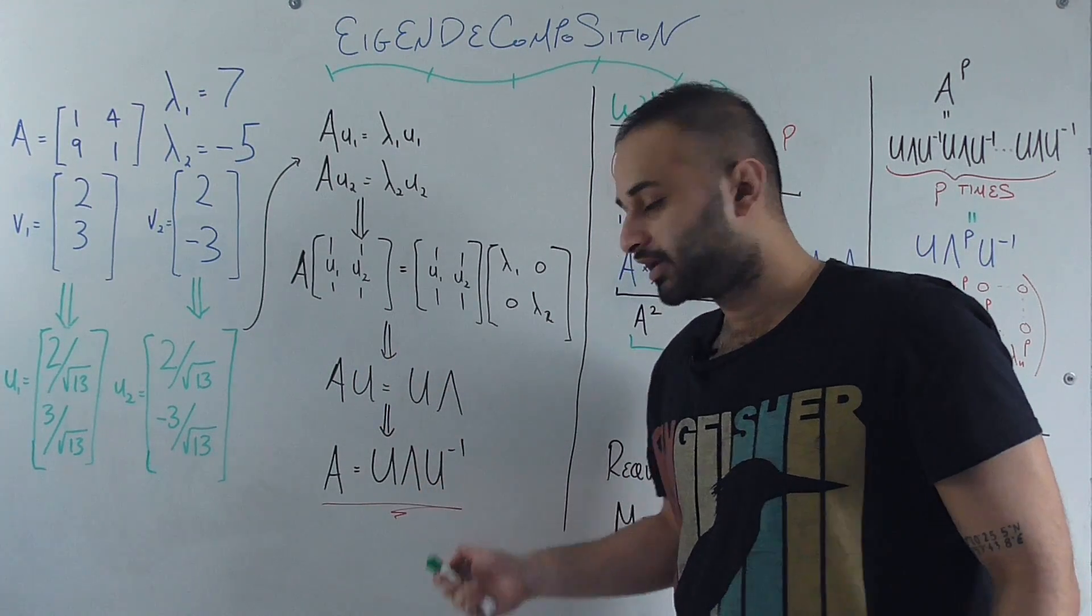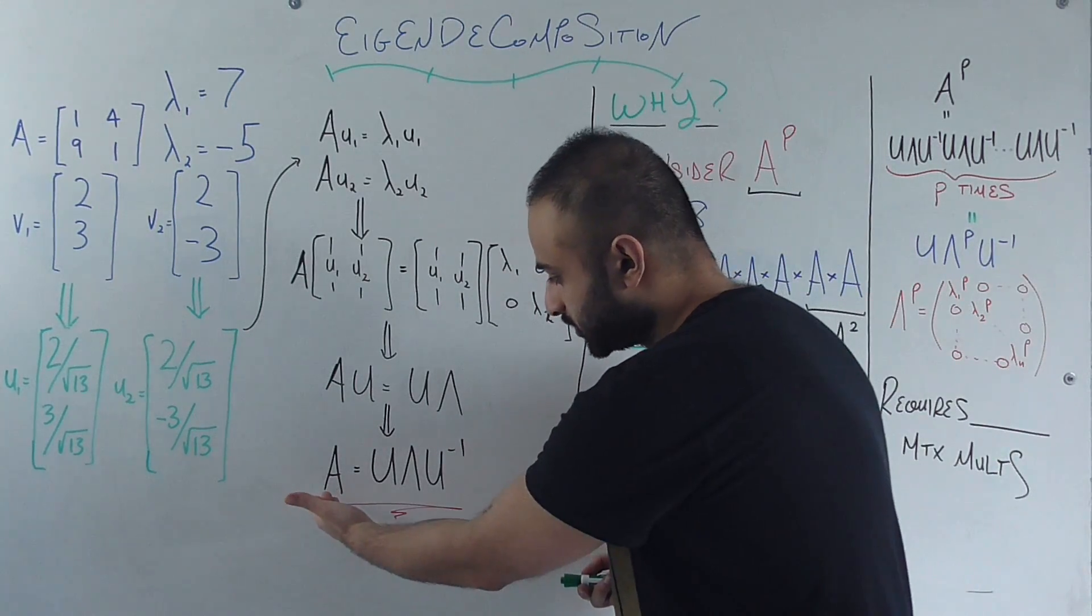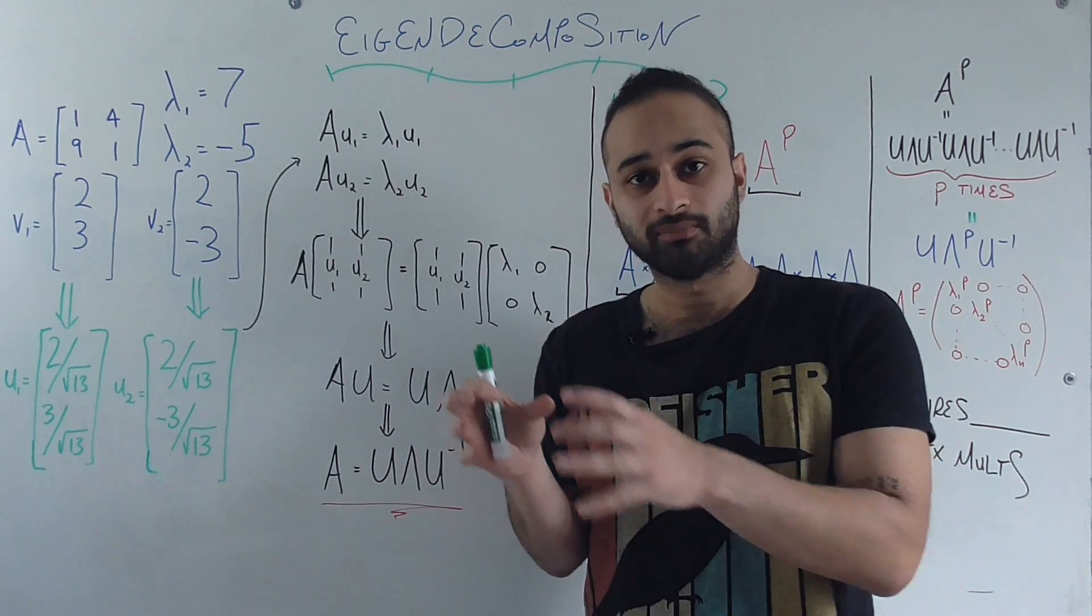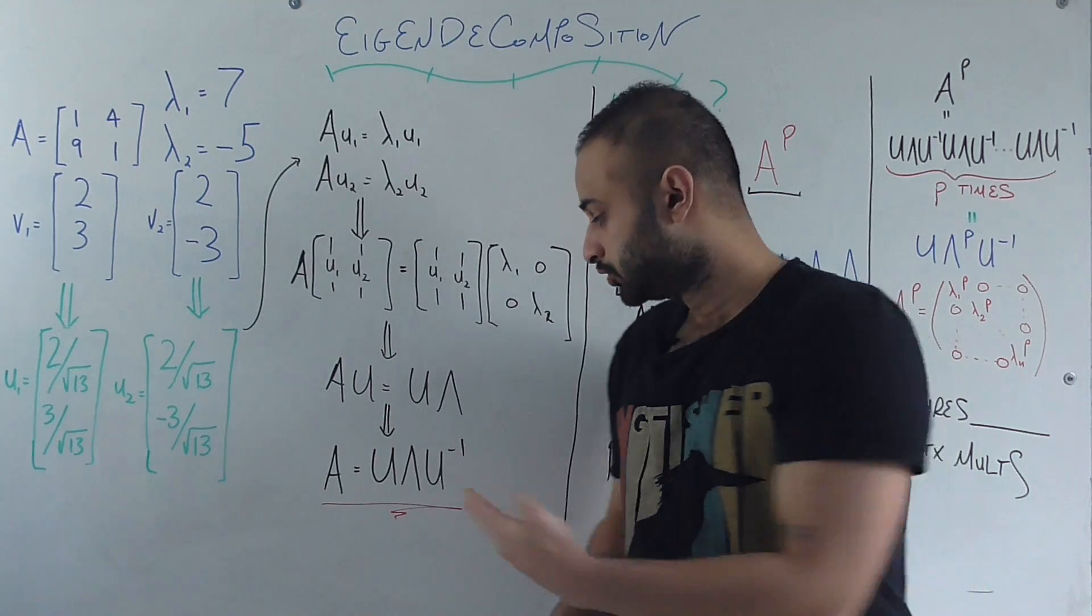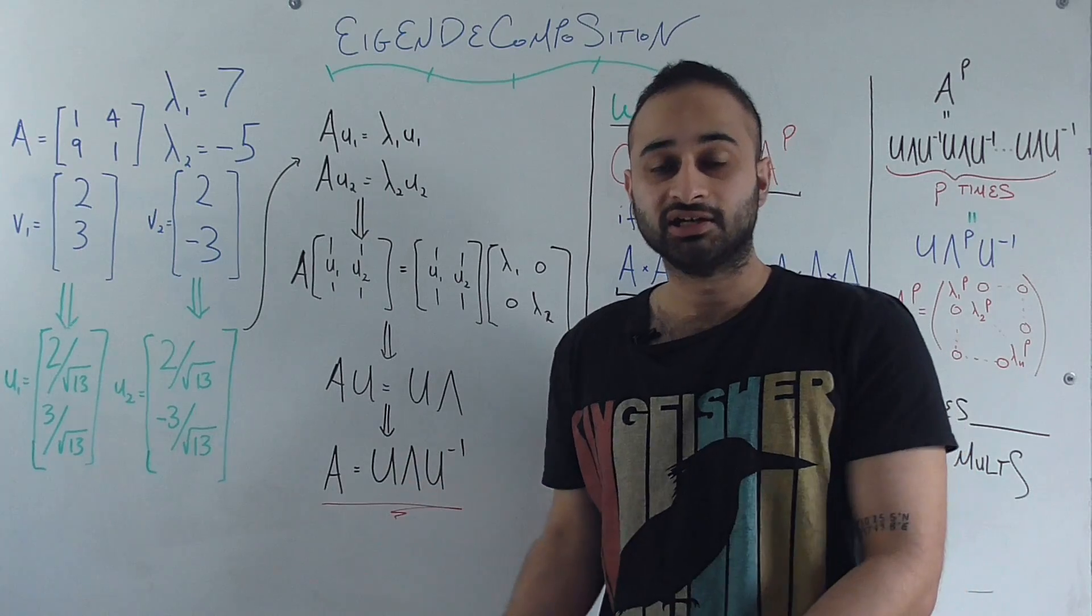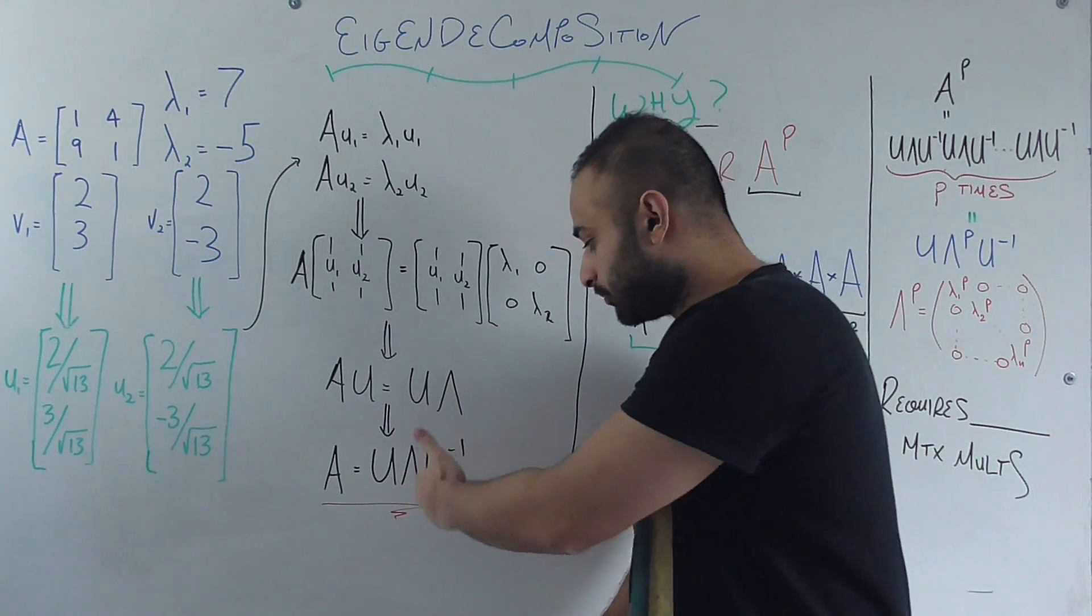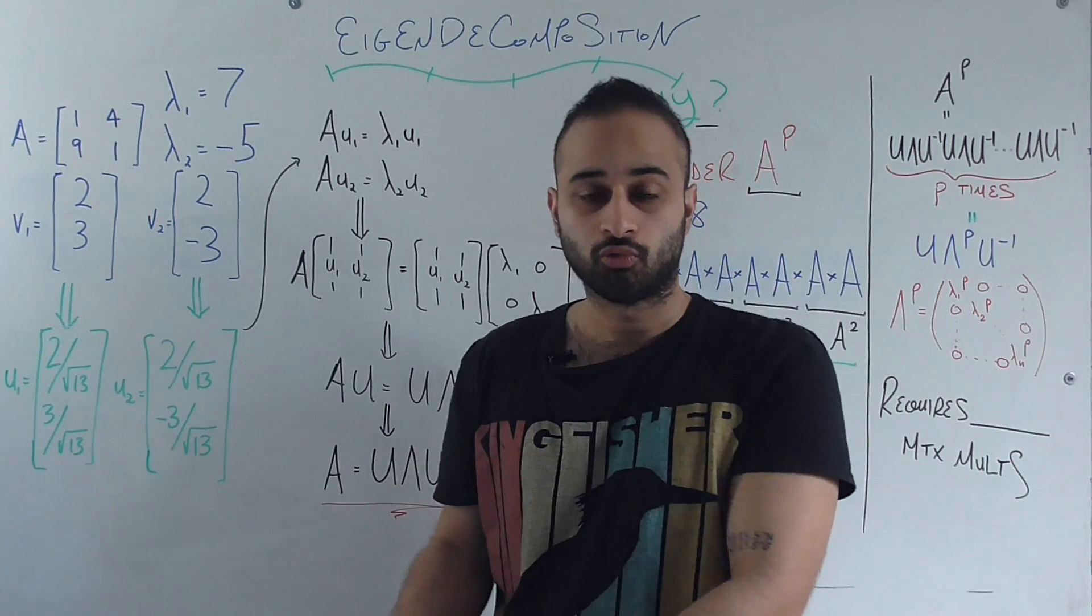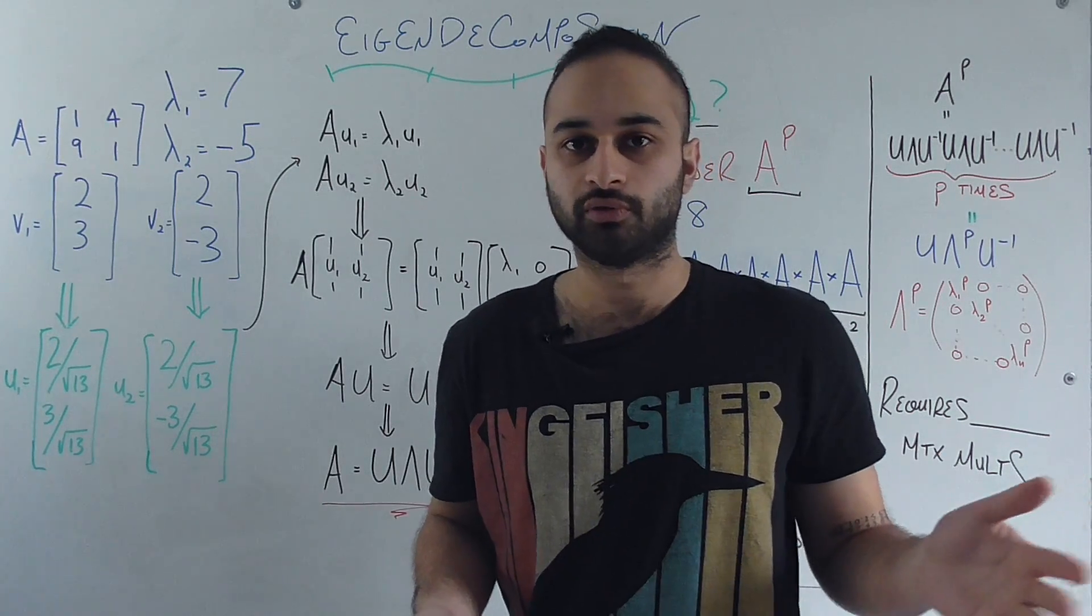And this thing that I've underlined in red is what's called the eigendecomposition. The reason it's called that is because we're decomposing A. Decomposing a matrix means splitting it up into component matrices. So we're taking A and representing it as three component matrices: U, lambda, and U inverse. And it's called an eigendecomposition because U contains the eigenvectors and lambda contains the eigenvalues. So that's how you take an eigendecomposition, what it means, and how you would do one manually if you had to, although you'll pretty much never have to do that.